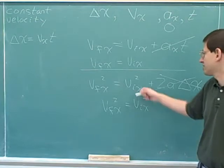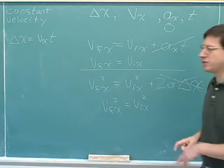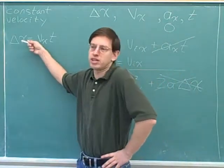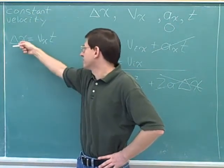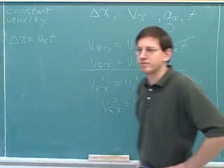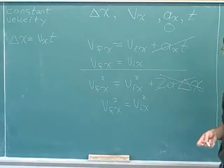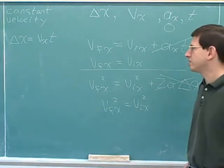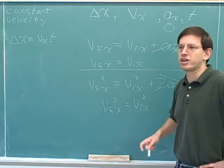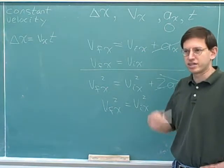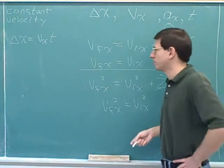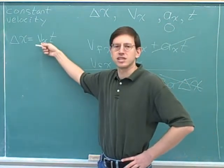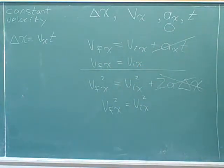So this equation turns out not to be useful for finding displacement because that term will be multiplied by zero and drop out. The bad news is that this equation is not useful, but the good news is we don't need it because we already have a good equation. We can just use distance equals rate times time. For constant velocity, you don't need all the standard kinematics equations — just plug into distance equals rate times time.